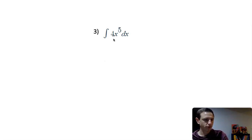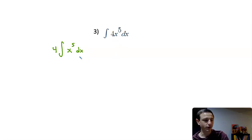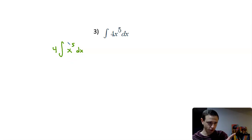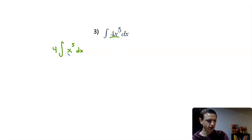We want to integrate the function 4x to the fifth dx using the power rule. There are two ways to deal with the constant: take it out so it's four times the integral of x to the fifth dx, or just leave it in. Starting off, if you're new to integrals, it's probably preferable to focus on the integral portion first and then deal with the constant afterward.